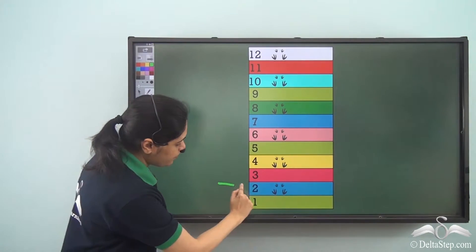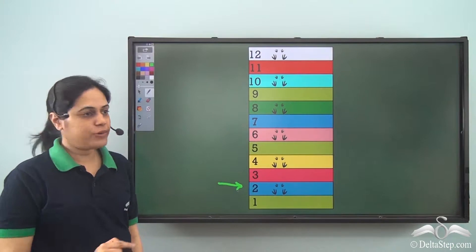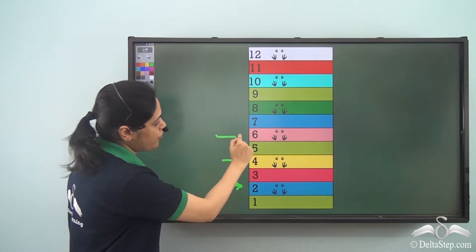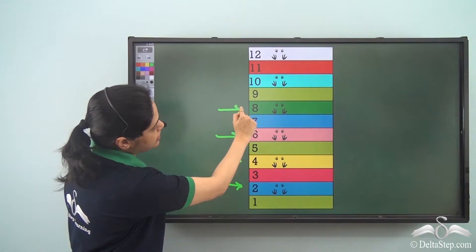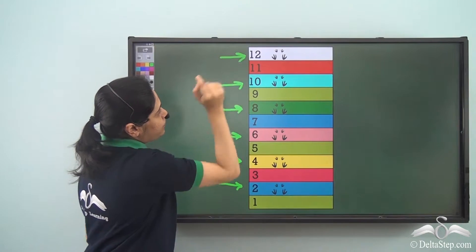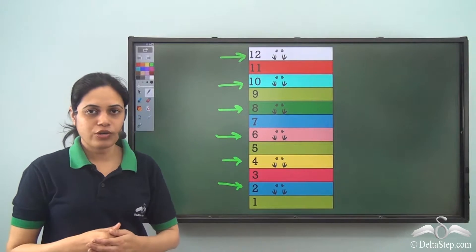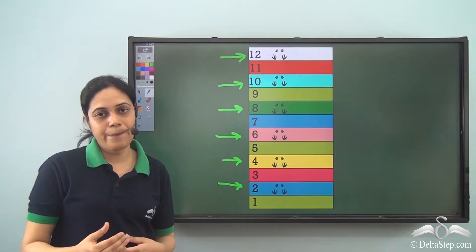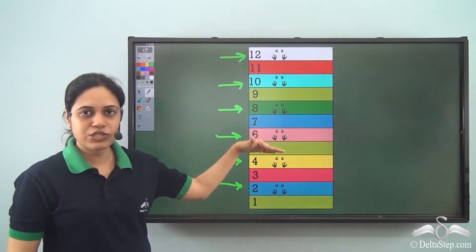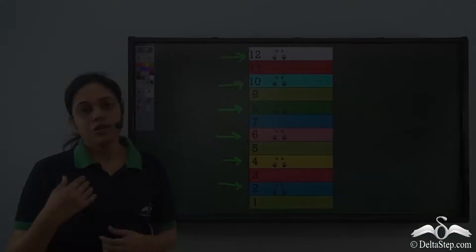So he first went to track number 2, then track number 4, track number 6, 8, 10, 12 and so on. So he was hopping two steps at a time.